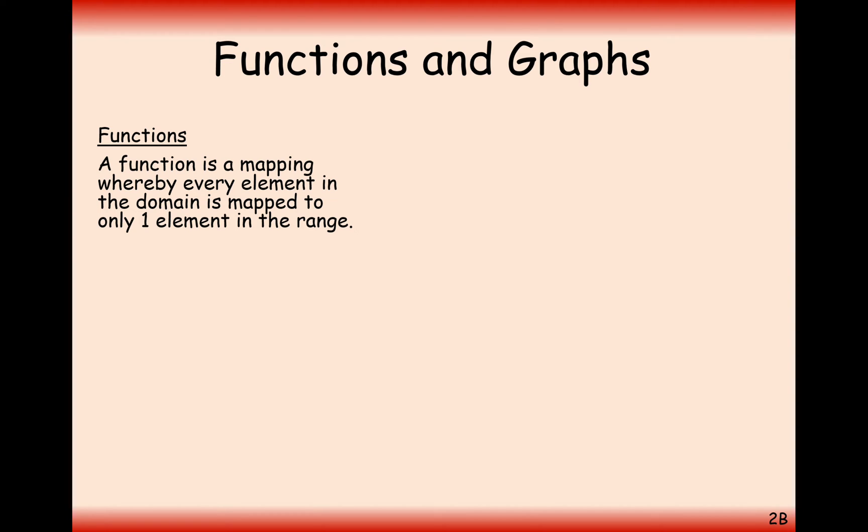Those two types of mappings there are the only types that we're going to consider as functions. The definition of a function is that a function is a mapping whereby every element in the domain, that's a posh word for inputs, is mapped to only one element in the range. The range is a posh word for outputs. Whatever number you start with, there is only one possible answer to the operation performed on it.